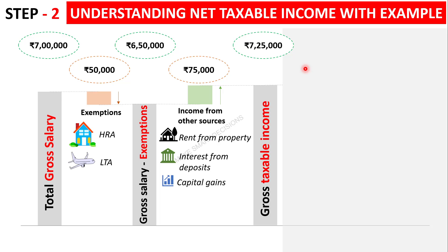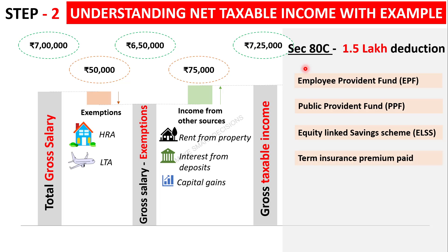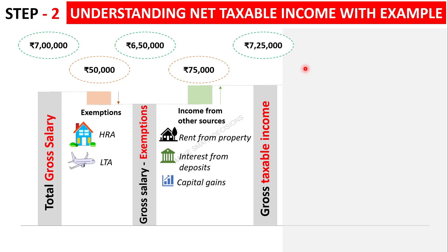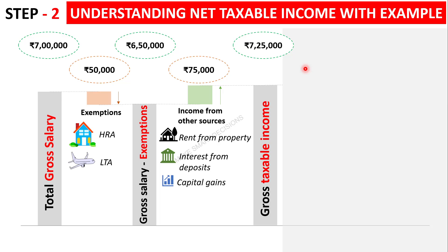The individual can claim deductions, primarily defined under Section 80. The major deduction is Section 80C, where you can claim up to 1.5 lakhs by investing in Employee Provident Fund, Public Provident Fund, ELSS, term insurance premiums, or the principal repayment of a housing loan. Under Section 80D, premiums paid for health insurance for yourself and your parents are deductible — the amount depends on age. Interest paid on an education loan is also deductible from your taxable income.